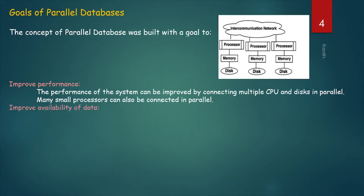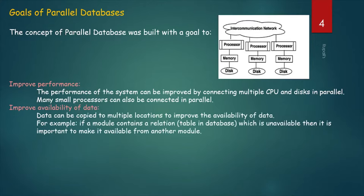Next, Improve Availability of Data. Data can be copied to multiple locations to improve availability. In a parallel database, nodes have less contact with each other, so the failure of one node does not cause failure of the entire system. These amount to significantly higher database availability. For example, if a module contains a relation (a table in the database) which is unavailable, then it is important to make it available from another module.